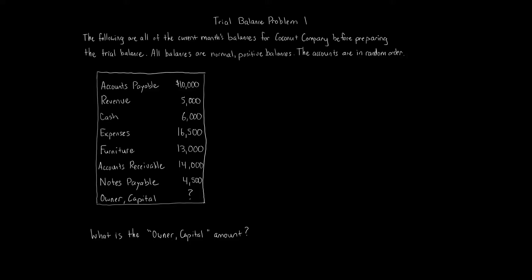This question is really a trial balance question. You're given a bunch of accounts in random order before doing the trial balance, and you need to determine one specific account's balance. All you have to do is go through and put together a trial balance and you can solve for owner's capital.